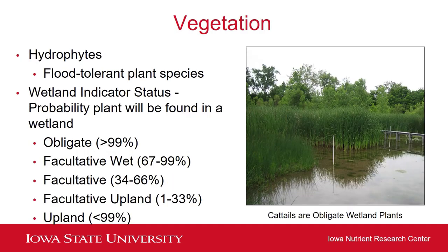Moving on to vegetation — wetlands have what are called hydrophytes. Hydrophytes are flood-tolerant plant species. You can categorize plants based on the probability that the plant will be found in a wetland, referred to as its wetland indicator status. Obligate plants are found 99% of the time in wetlands. Facultative wet plants are found between 67 and 99% of the time in wetlands. Facultative plants are found between 34 and 66% of the time in wetlands. Facultative upland and upland plant species you will typically not see within a wetland ecosystem.